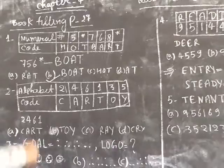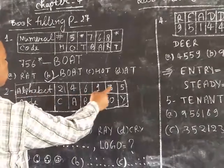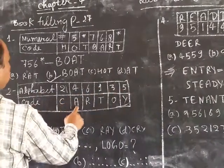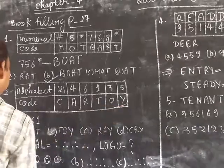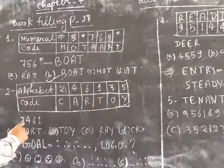Next, number 2: alphabet code 246135. 2 is C, 4 is A, 6 is R, 1 is T, 3 is O, 5 is Y - CARTOON.